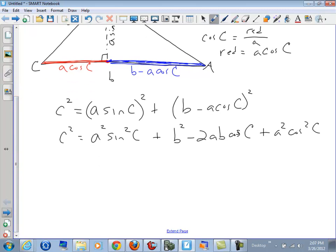I can now group the two terms that have a squared in it, and I can factor an a squared out. So I get a squared times the quantity sine squared of C plus cosine squared of C. And then I'm going to leave the other two terms alone here.